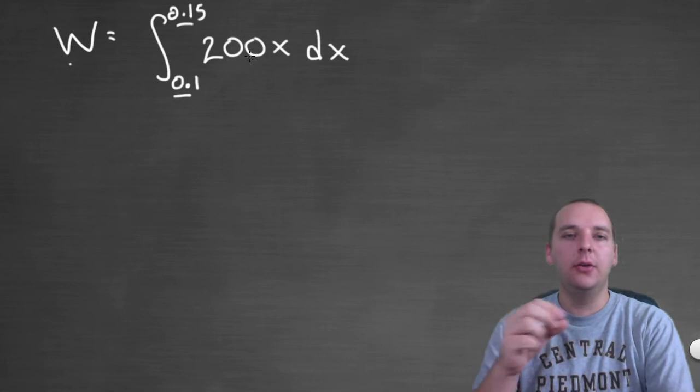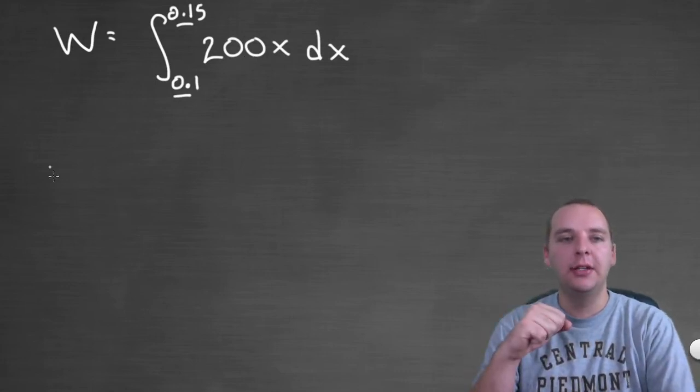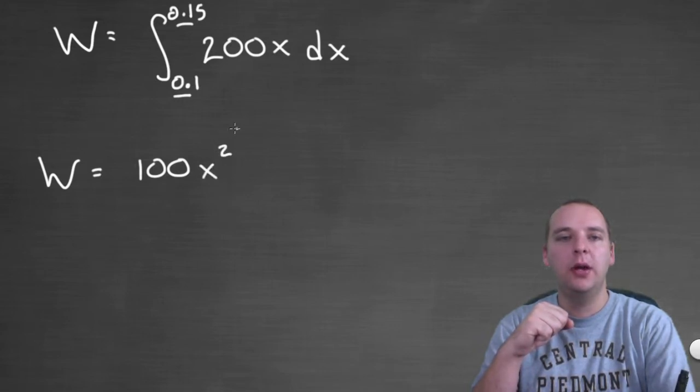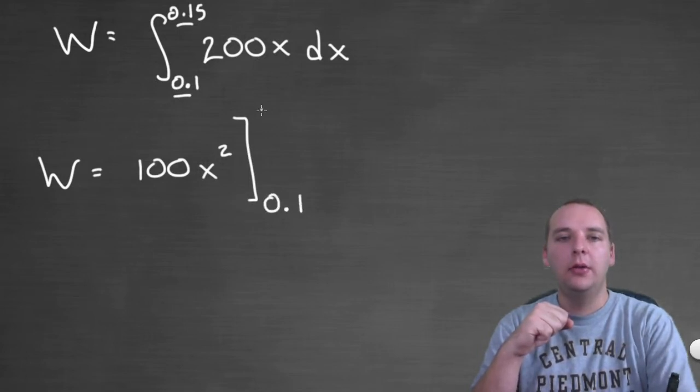Okay, so now we have our definite integral that's going to give us the work done in stretching our spring in an additional 5 centimeters. We'll do this integral, integral of 200x would be 100x squared, 100x squared, and we'll put a bracket with 0.1 to 0.15.